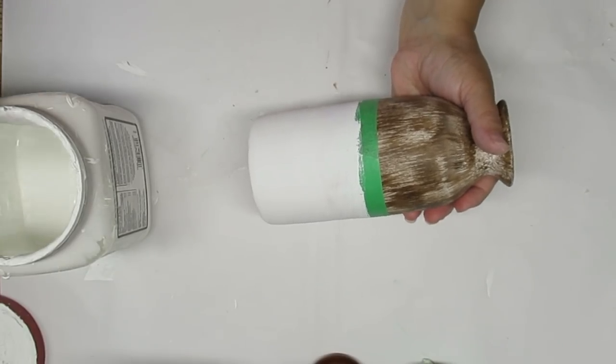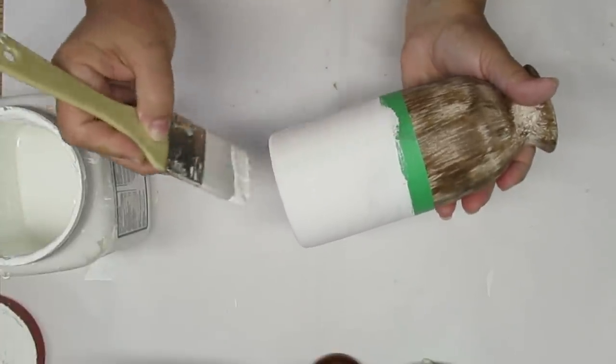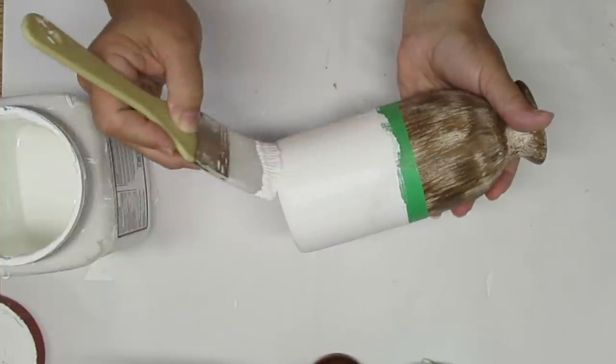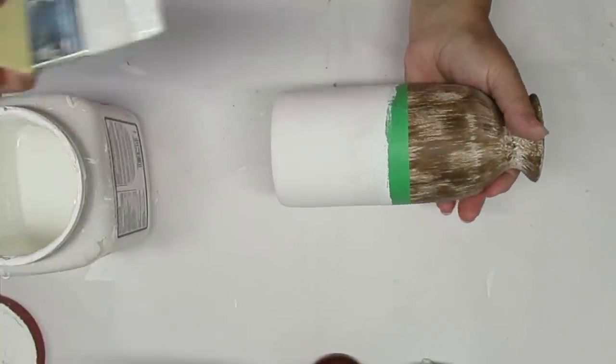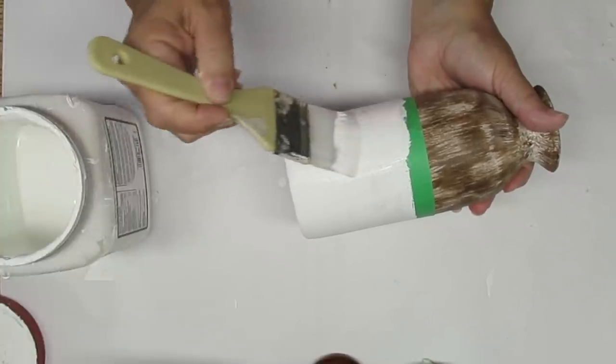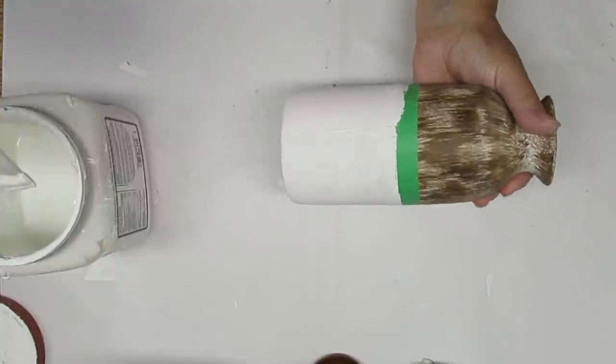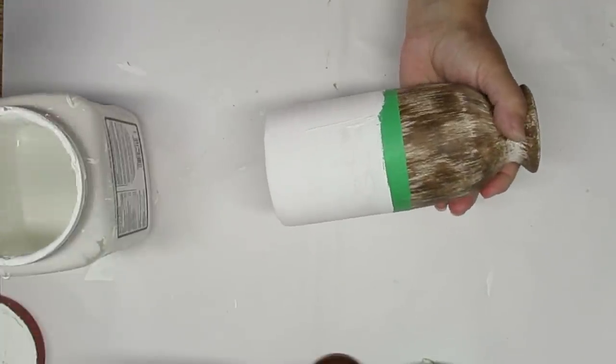Once the gel stain was completely dry, I let it sit for a couple of hours. I put some masking tape on and decided that I wanted to paint the bottom half completely white. I really love the two-tone look. The first coat that I put on, I used horizontal brush strokes. And the second coat, which I'm doing now, I'm doing vertical brush strokes.